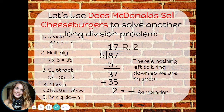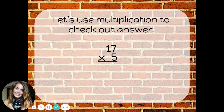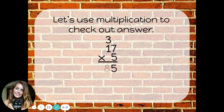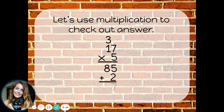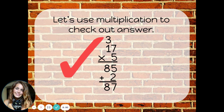That remainder needs to go up with my answer. So my answer is 17 remainder 2. Let's use multiplication to check that answer. 5 times 7 is 35. 5 times 1 is 5, plus 3 is 8. And then if you have a remainder like we did, you have to add that to it. 85 plus 2 is 87, which was our dividend. So our answer of 17 remainder 2 is correct.